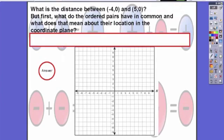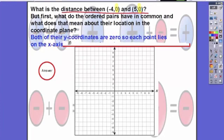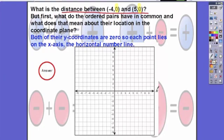Now we're going to go from a real world problem to a normal problem. We're focusing on this new question: what is the distance between negative four comma zero and five comma zero? Before we start, I want you to notice what do these ordered pairs have in common and what does that mean about their location? They both share the same y-coordinate. That means they're on the same horizontal line because they're not moving up or down. They're going to stay on the x-axis.